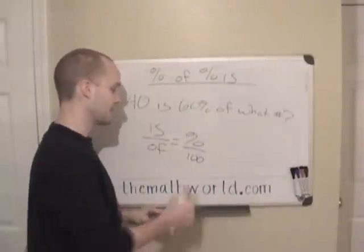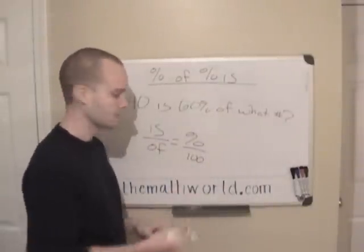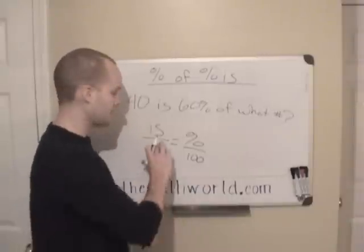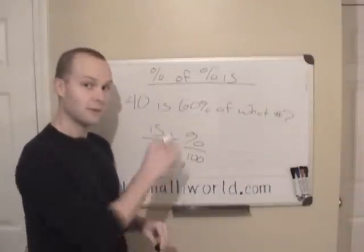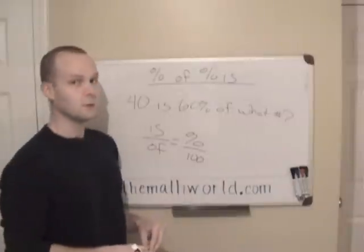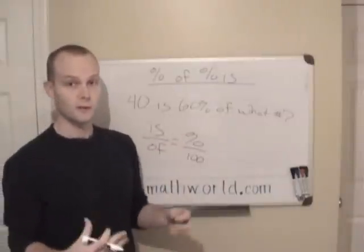They always give you 100, and they're going to give you two more of these three variables. So is over of equals percent, and you just have to fill in which variables they give you and solve for the other one.